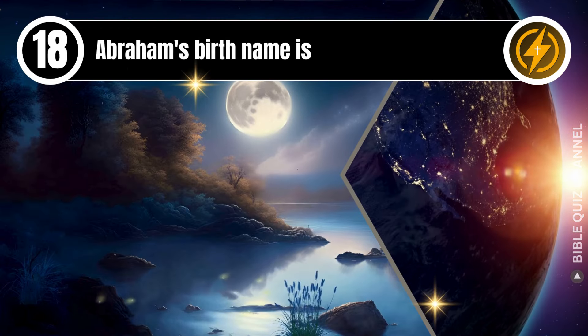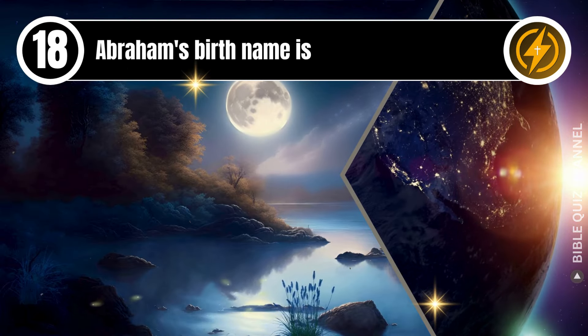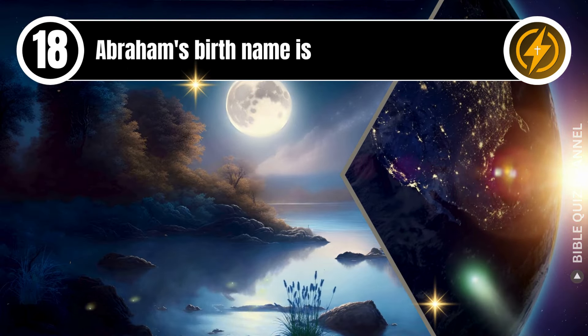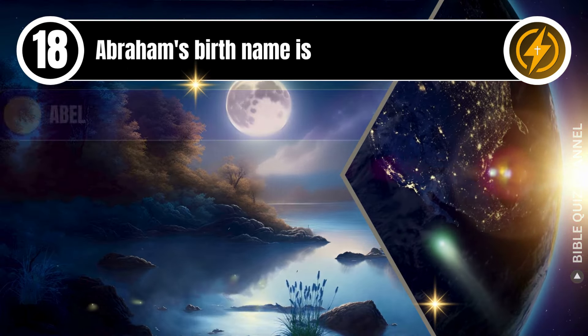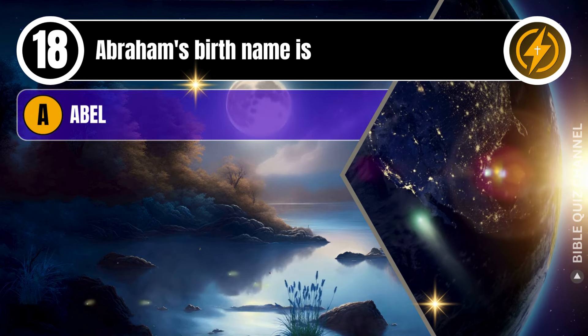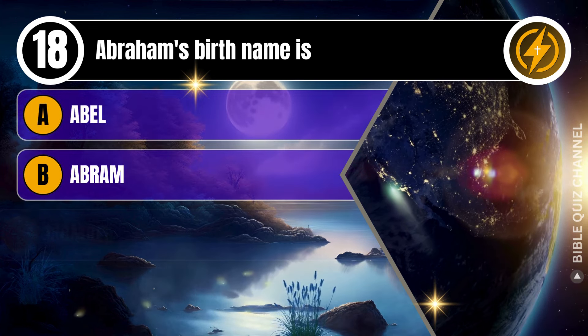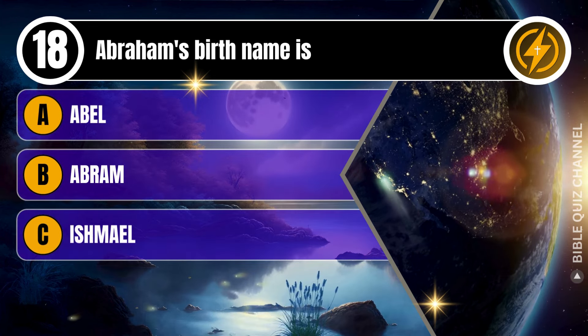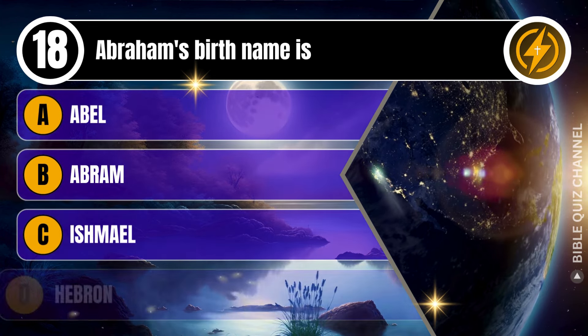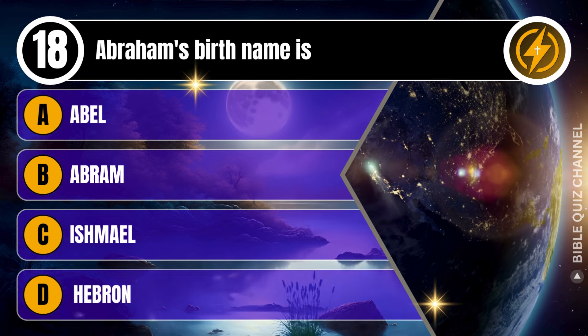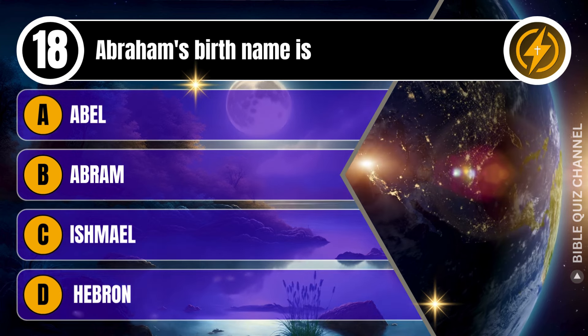Question 18. Abraham's birth name is: A. Abel. B. Abram. C. Ishmael. D. Hebron. You get 10 seconds.